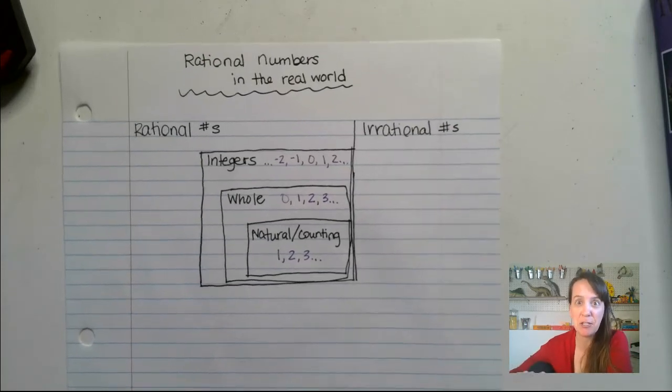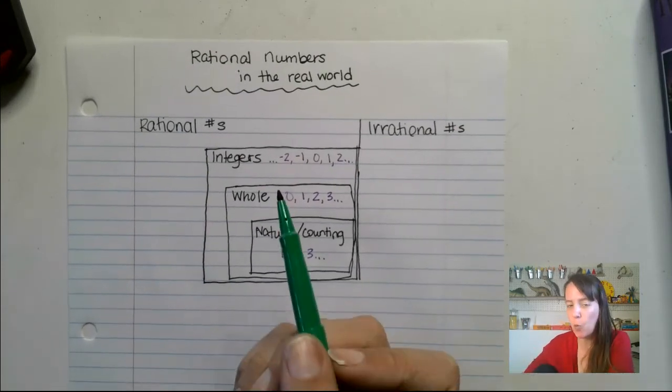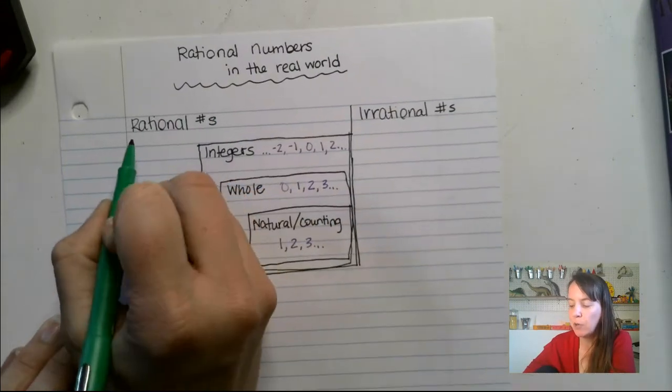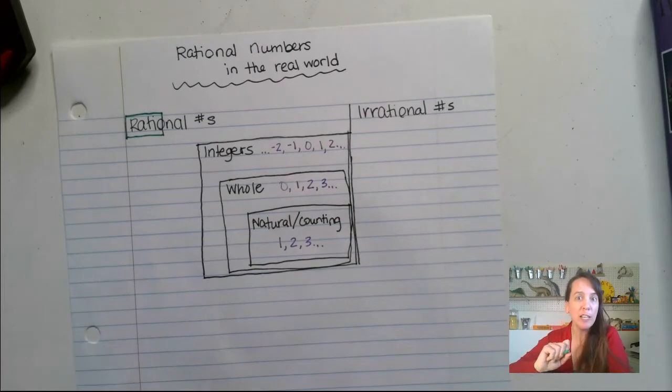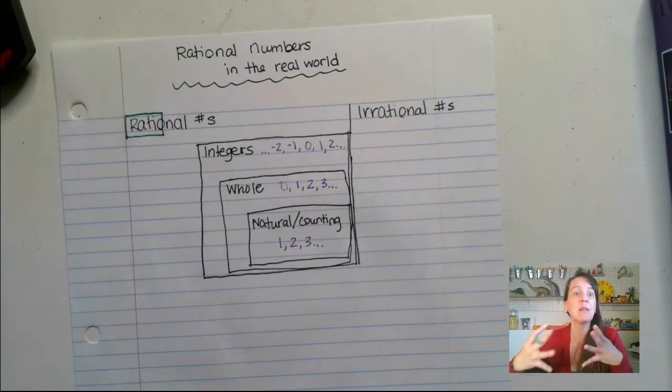Now the first thing I want to remind you is rational numbers. There's a word here that's hidden that will really help us understand what a rational number is. That word is ratio. Remember, a ratio is simply just a fraction. So if you have a number that you can write like a fraction, then it is a rational number.